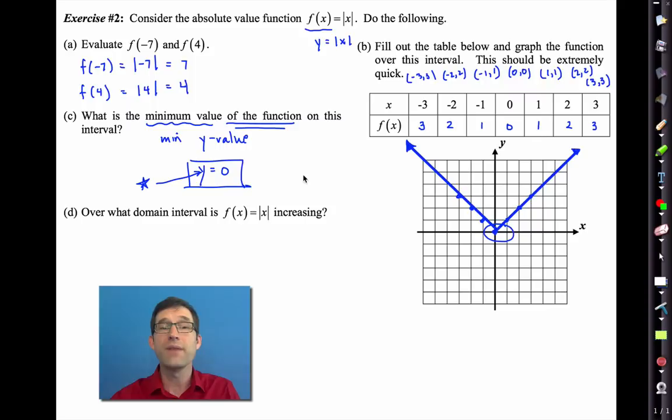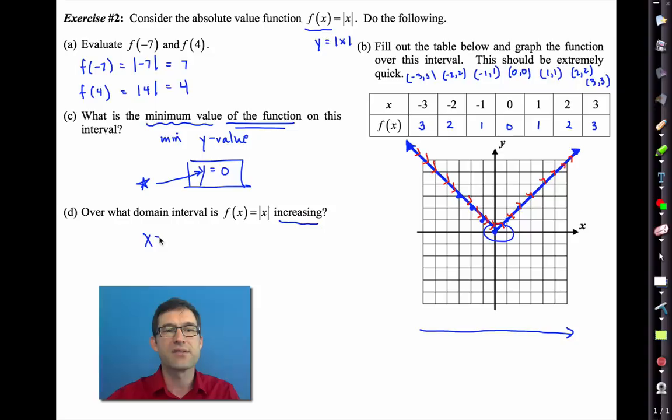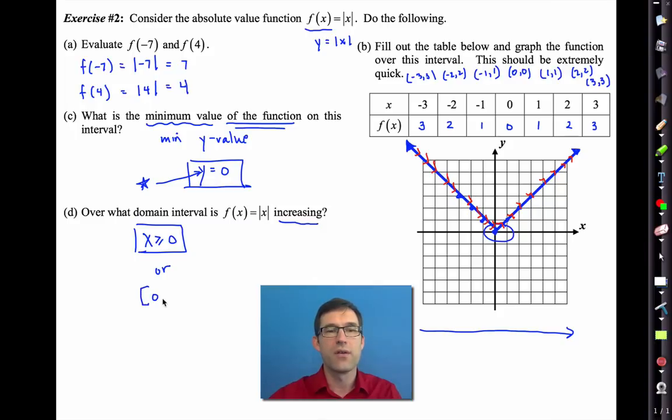Letter d asks over what domain is f of x equals the absolute value of x increasing? Now remember when we're talking about a function increasing or decreasing it means that we always read it from left to right. Let me change the color really quick. So if I read this graph from left to right I'm obviously decreasing decreasing decreasing. Then I hit x equals 0 and I start to increase.